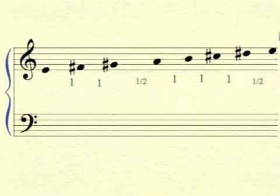This one starts on E. It's an E major scale. The second note is F sharp. It's a whole step above the E. The third note, G sharp, is a whole step above the one that precedes it.